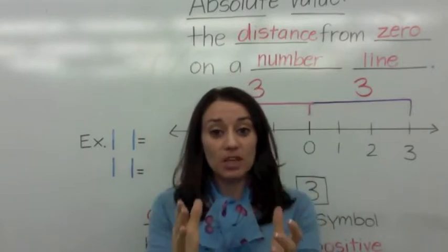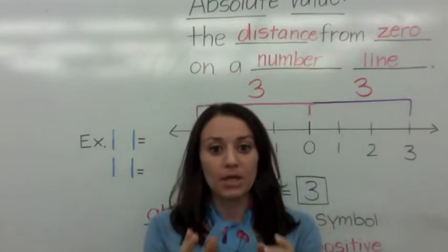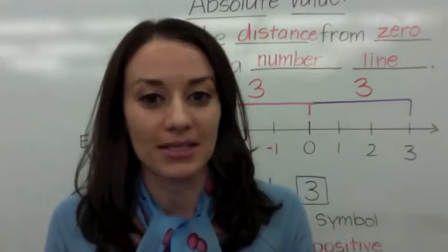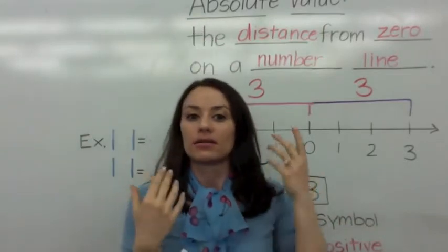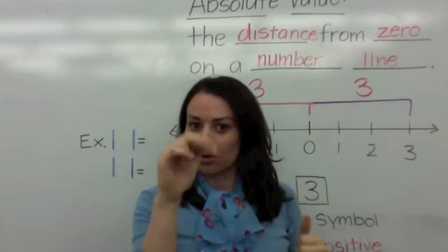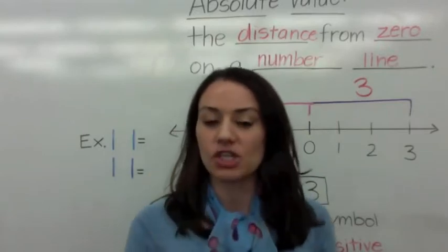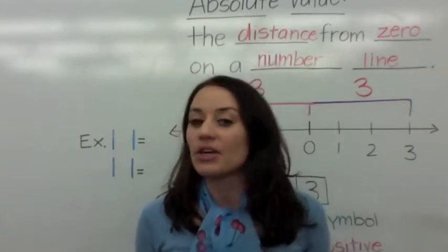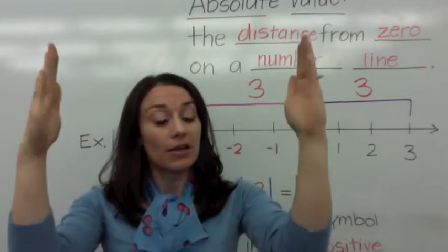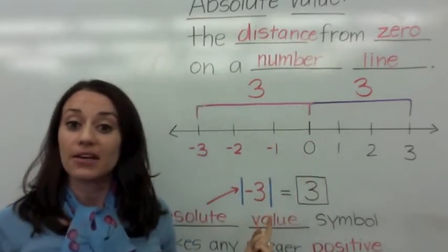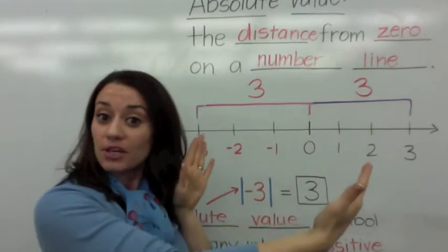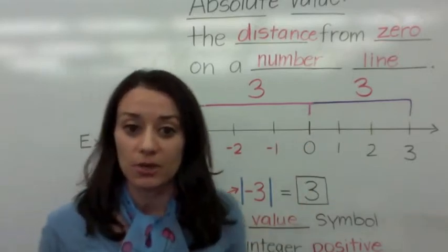Try and make the movements with me. We can go up, down, left, or right, because we're talking about absolute value — it's distance, so you can go really any direction. Talking absolute value, they're positive. The absolute value symbol makes any integer positive, because it's just the distance from zero, and distance is always positive.